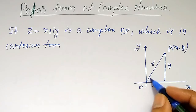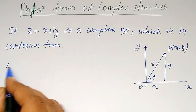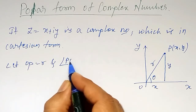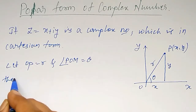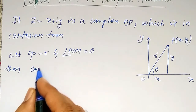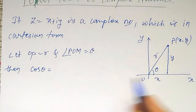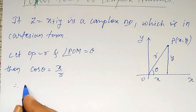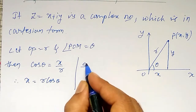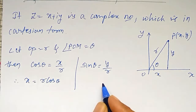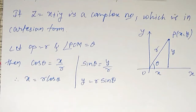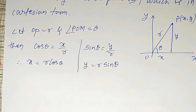And if OP makes an angle theta here — let OP equal to r and angle POM equal to theta — then cos theta, from the figure, I can write as adjacent by hypotenuse, that is x divided by r. Therefore my x is equal to r cos theta. Whereas sin theta I can define as y divided by r. Therefore y is equal to r sin theta.